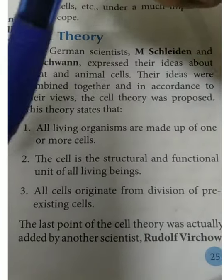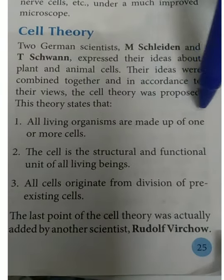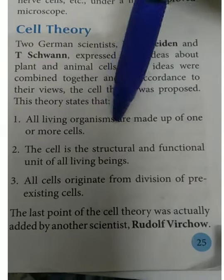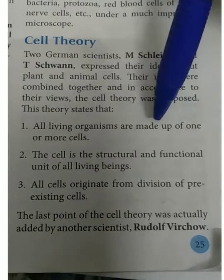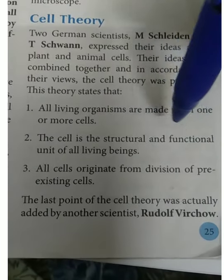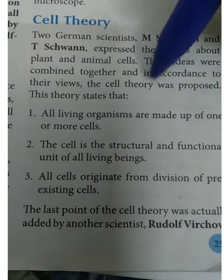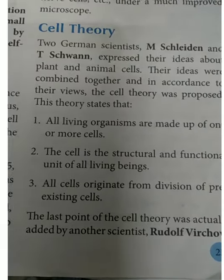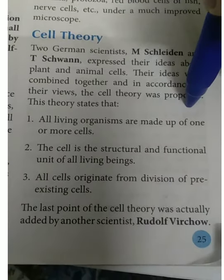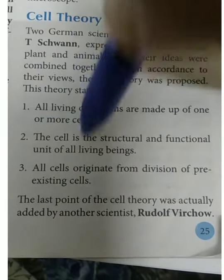According to the cell theory: 1. All living organisms are made up of one or more cells. 2. The cell is the structural and functional unit of all living beings. Organs and body parts are made up of cells — roots, stems, and leaves in plants; hands, legs, heart, and brain in humans are all made up of cells. 3. All cells originate from the division of pre-existing cells.